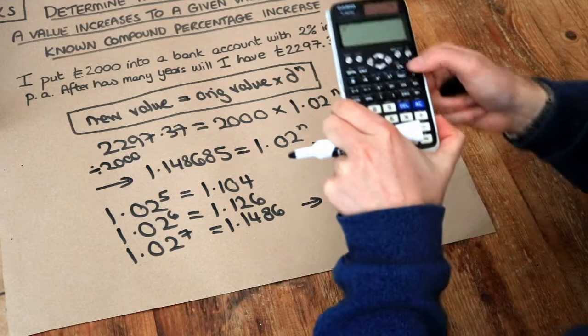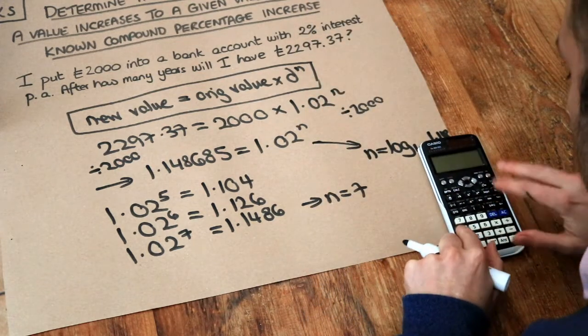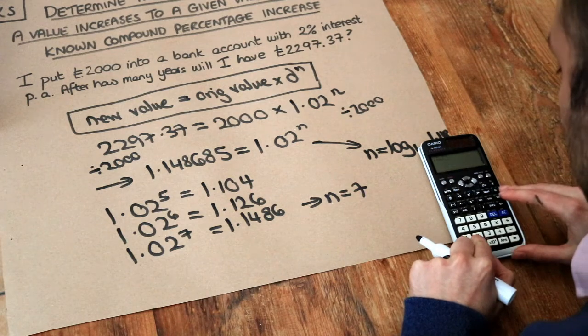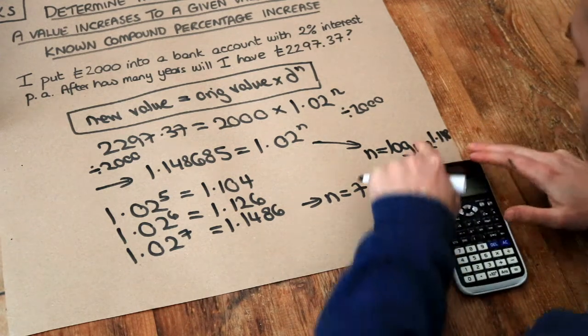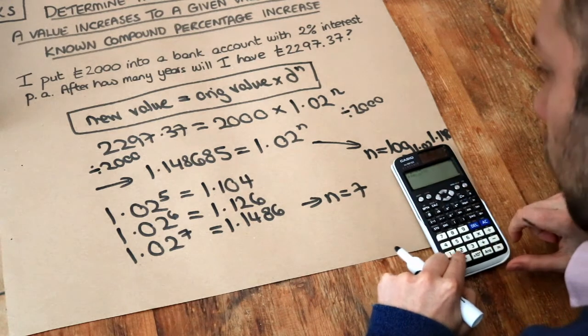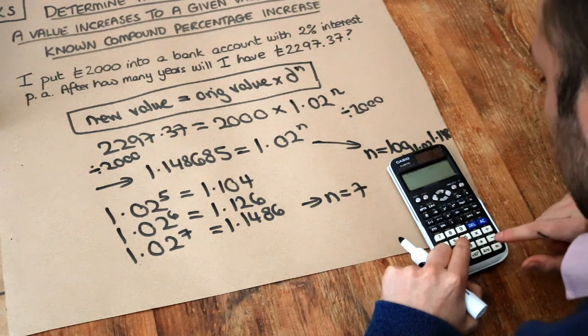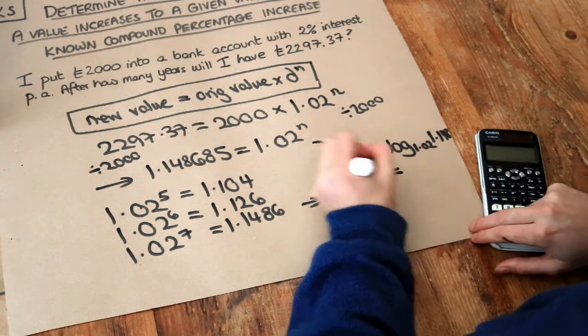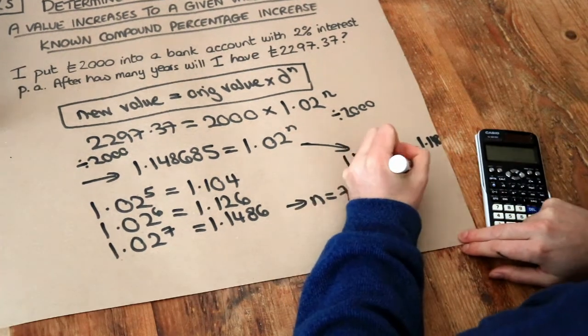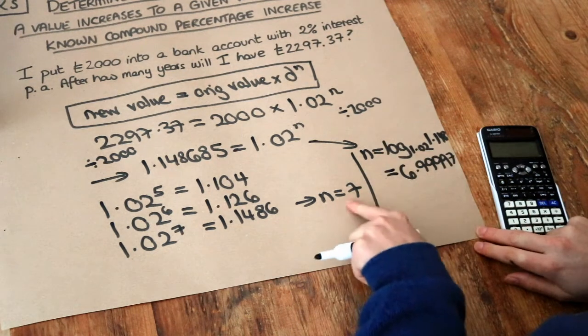And now if we use this button here, with the log of the two squares next to it, and we put log base 1.02, so a little 1.02, of this number here. So press the right key, 1.148685. Press equals. And that gives me a value of 6.99997. And we can see we're right on the money with 7 here, because this value is pretty much 7.